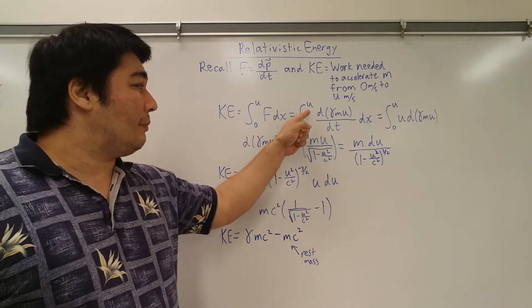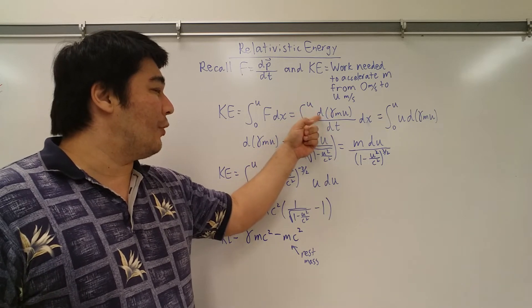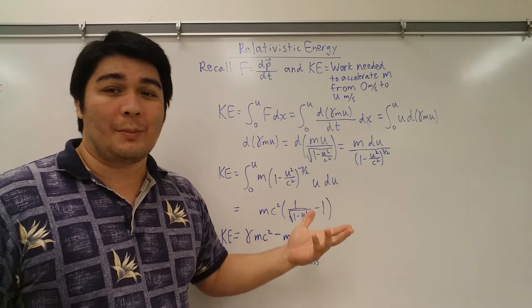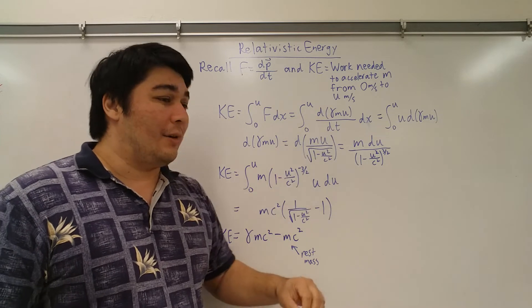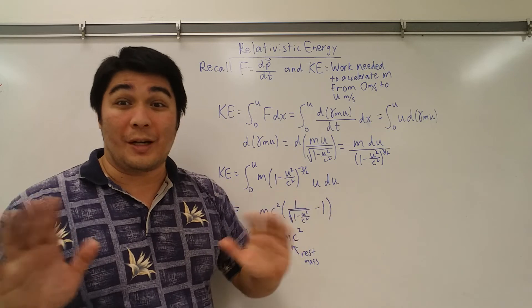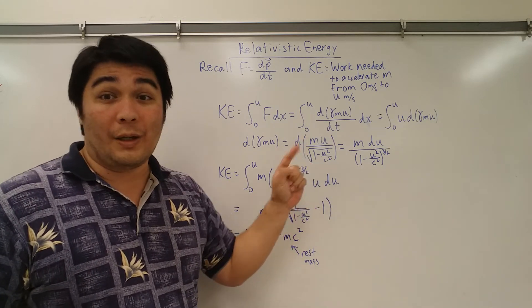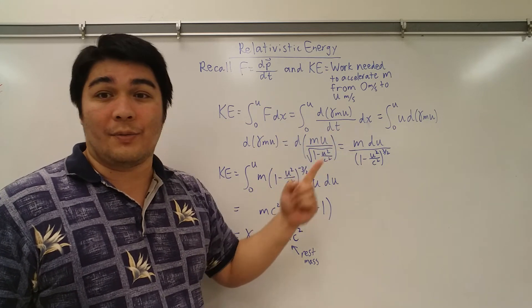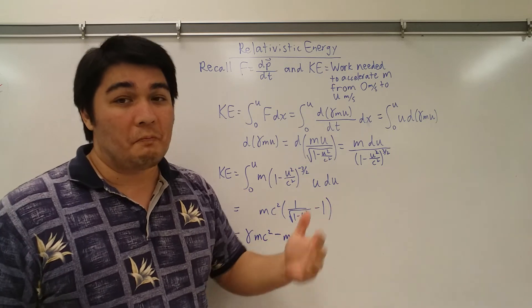So I've got the differential of gamma mu from our relativistic momentum video. And then I've got dx and dt here. Now, I know a lot of times you've been taught in calculus, you can't mix the differentials here, but in some cases you can. And this is one of those cases where you can actually say, well, dx/dt, oh well, that's velocity. So we're good. That's the same as du. So there we go.